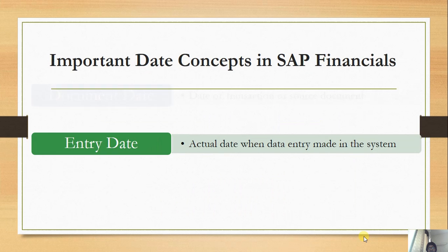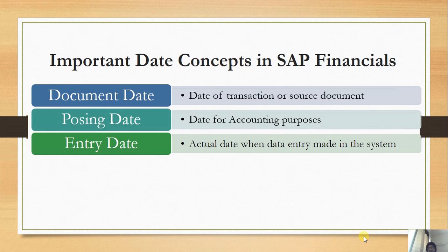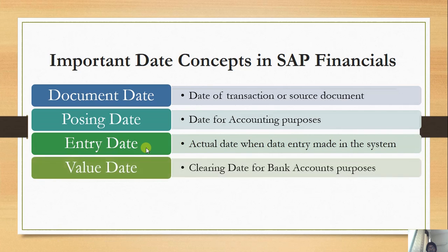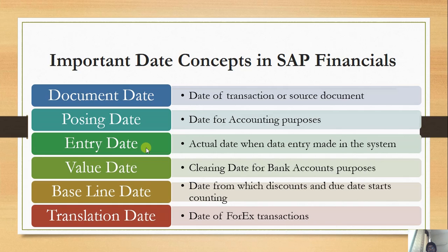To recap: the document date is generally the date of the transaction or source document. The posting date is the date for accounting purposes — this is the most important date for all accounting purposes. The entry date is the actual date when data entry is made in the system. The value date is the clearing date for bank account purposes. The baseline date is the date from which discounts and due dates start counting. Finally, for a document posted in foreign currency, there is also a translation date, which is used for foreign exchange translation into the local currency or company code currency.